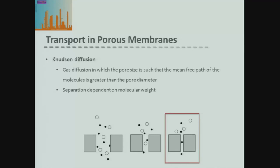For very small pores in gas separation, we have a special case: the mean free path of the gas molecule is actually greater than the pore diameter. In this case, we get a special case of diffusion called Knudsen diffusion, which means we can actually achieve separation of our gas molecules. That separation is dependent on the molecular weight of our gas molecules. Later in the lecture, I'll go through the equations for gas diffusion through porous membranes.